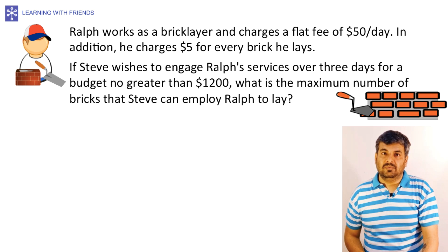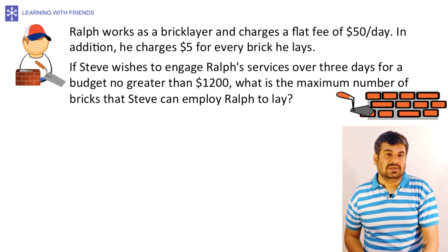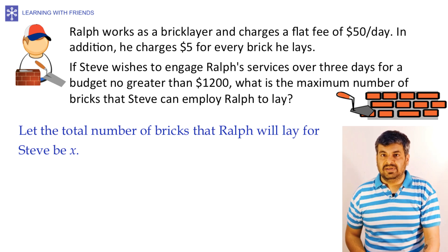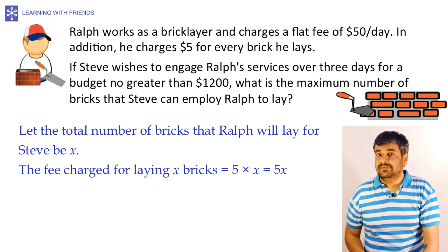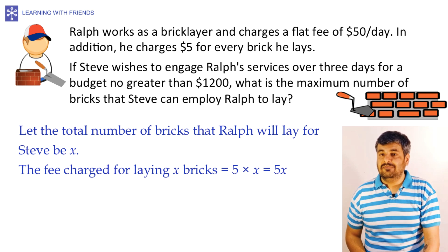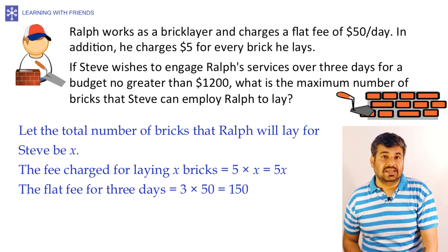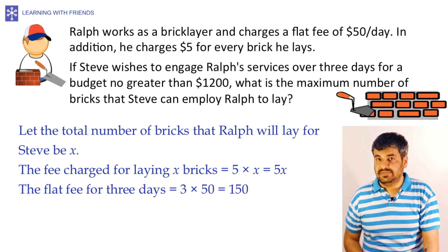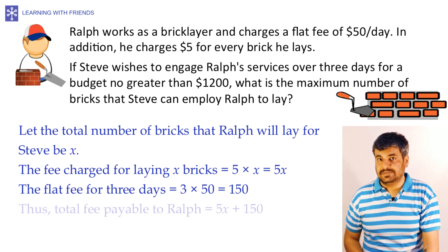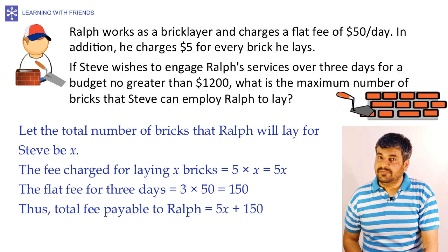To solve this word problem, we first need to design the inequality around it. Let the total number of bricks that Ralph will lay for Steve be x. Then the fee charged for laying x bricks would be 5 multiplied by x or 5x. Since for every brick that Ralph lays, he charges $5. The flat fee for 3 days would be 3 multiplied by 50 or $150 since per day flat fee is $50.